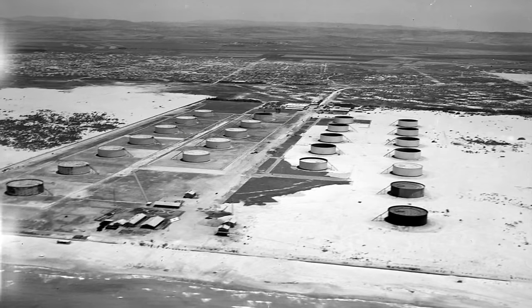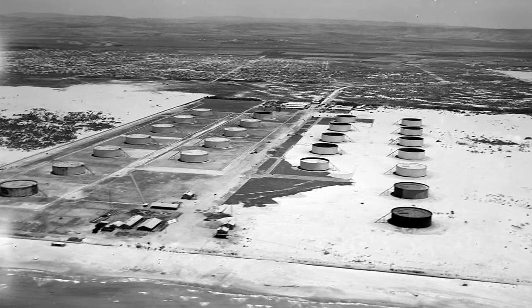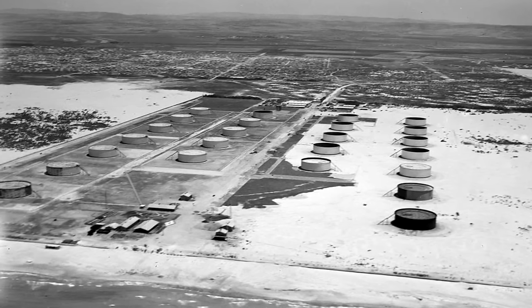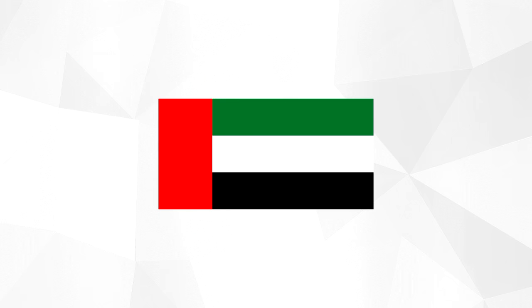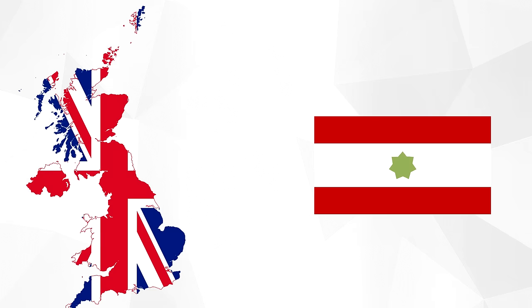A few decades later, in the 1950s and 60s, a massive discovery took place which would transform the region: oil. With the discovery of oil, there were calls for unification by the sheikhs, since they felt that they would be stronger united than being divided into small emirates. At the same time, the British realized that they would no longer be able to govern the Trucial States, as it was costing them about £12 million a year to keep their forces in the Gulf and they were not prepared to defend them in case of an attack.